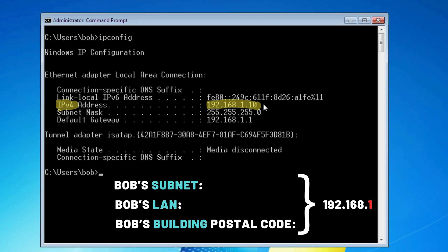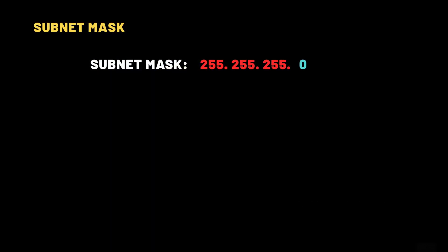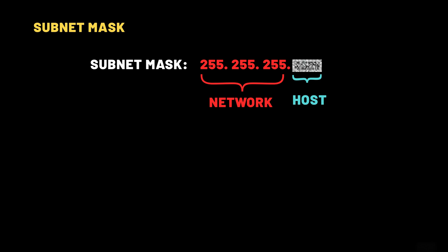From the output of our ipconfig command, we also see the terms subnet mask and default gateway. A subnet mask is a 32-bit number used to split an IP address into two parts. The first part is the network part, which tells us which subnet, LAN, or building the device belongs to. The second part is the host part, which identifies the specific device or apartment inside that subnet. It's called a mask because, just like a physical mask, it hides part of something and reveals the rest — specifically, it reveals the network part of the IP address and hides the host part.